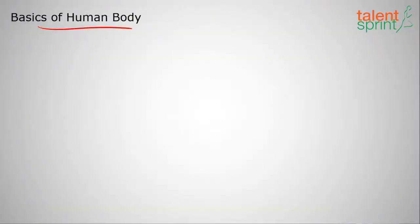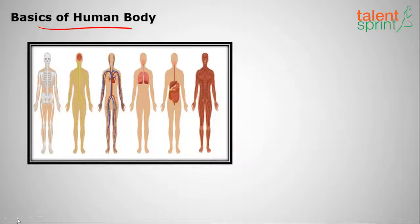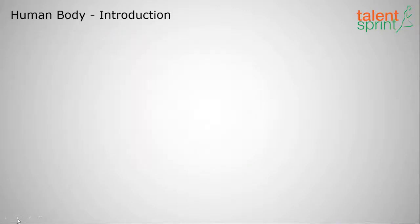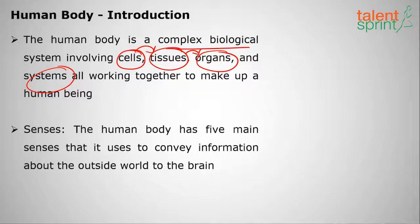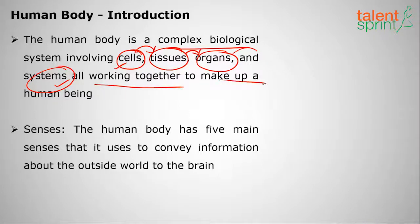Welcome to Talent Sprint. In this series of biology lessons, we'll deal with the basics of the human body. The human body is a complex biological system involving cells, tissues, organs, and systems. Groups of cells make up tissues, groups of tissues make up organs, and groups of organs make up organ systems. The cell is the basic unit of the human body, and the organ system is the largest unit.